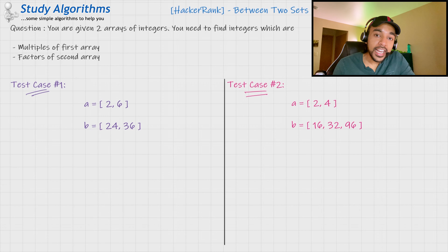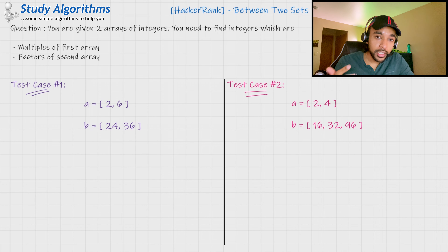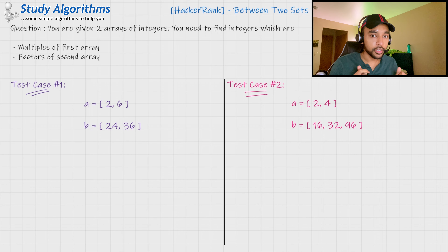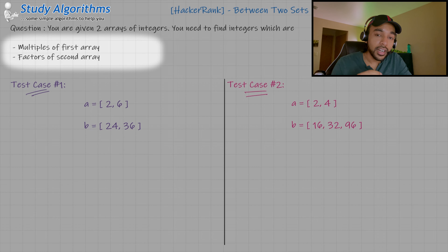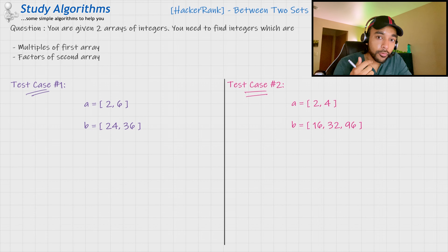The best way to understand any problem is to understand the given sample test cases. I know that the way this problem has been written is super complex. So I have simplified this problem for you in very small words. What you need to do is: you are given two arrays of integers and you need to find out some integers that are the multiples of the first array and that are the factors of the second array.